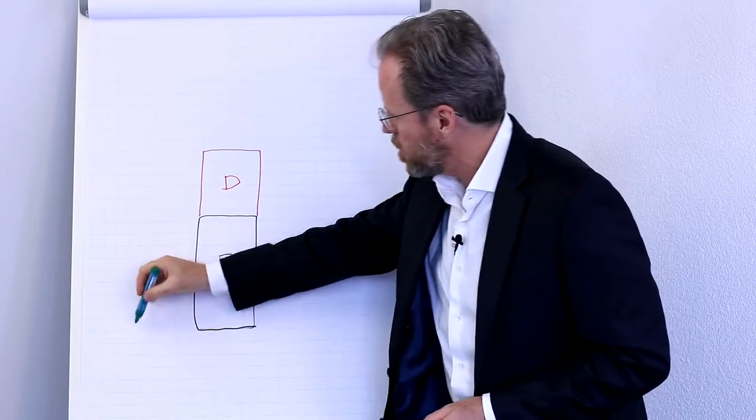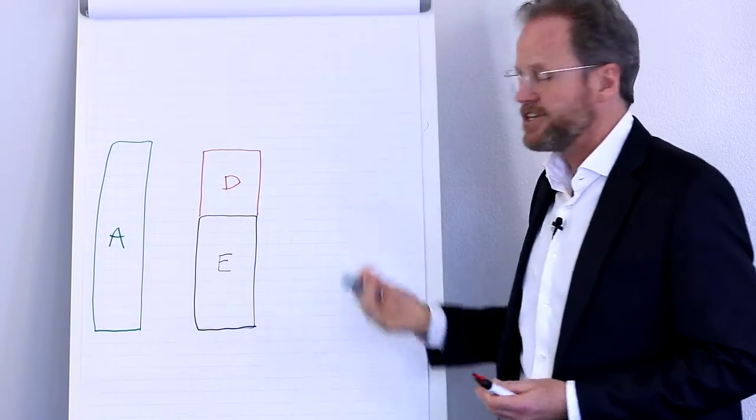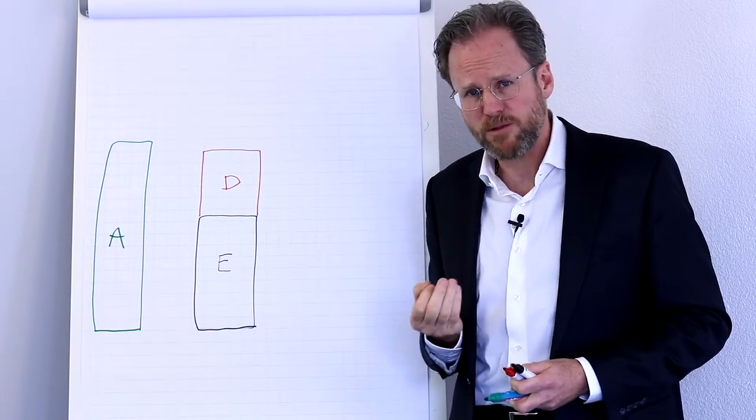So equity and debt corresponds to the assets that the company actually has, that it can use to produce products and services. What is now the problem with that?